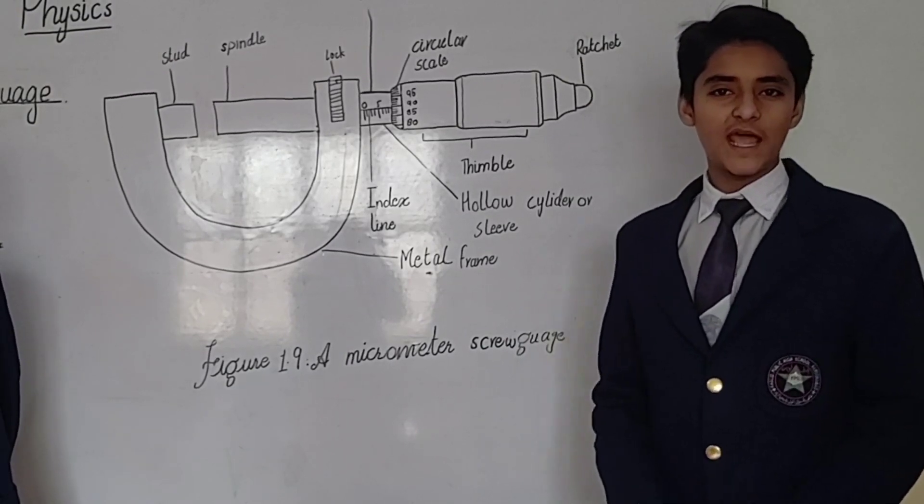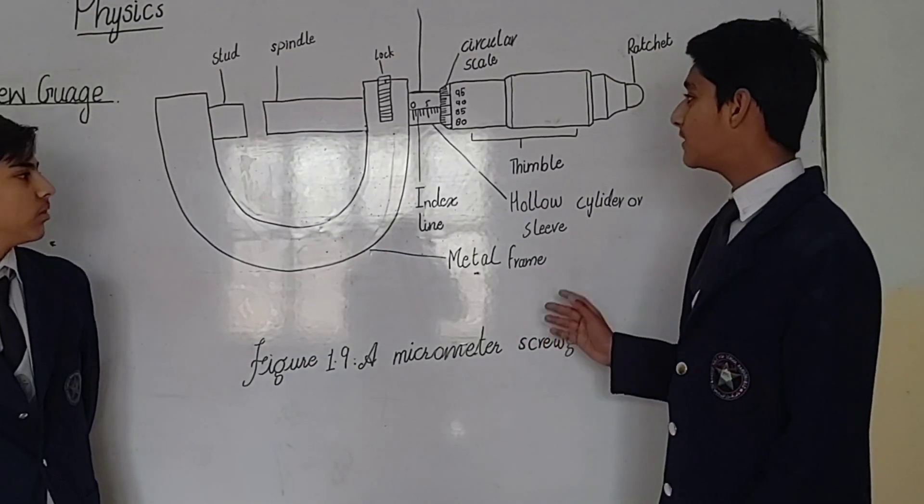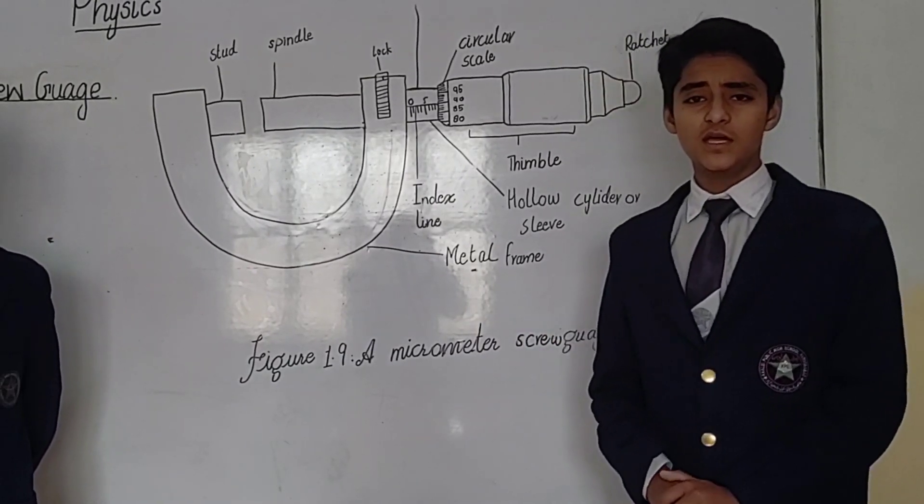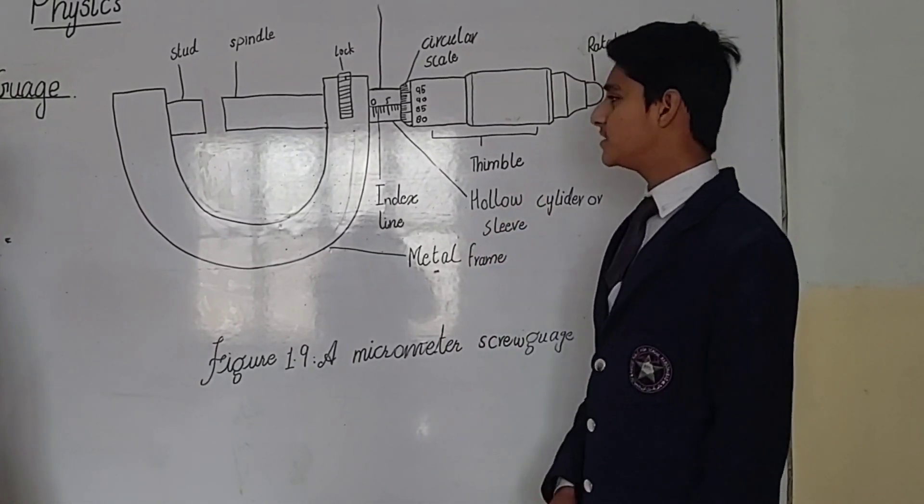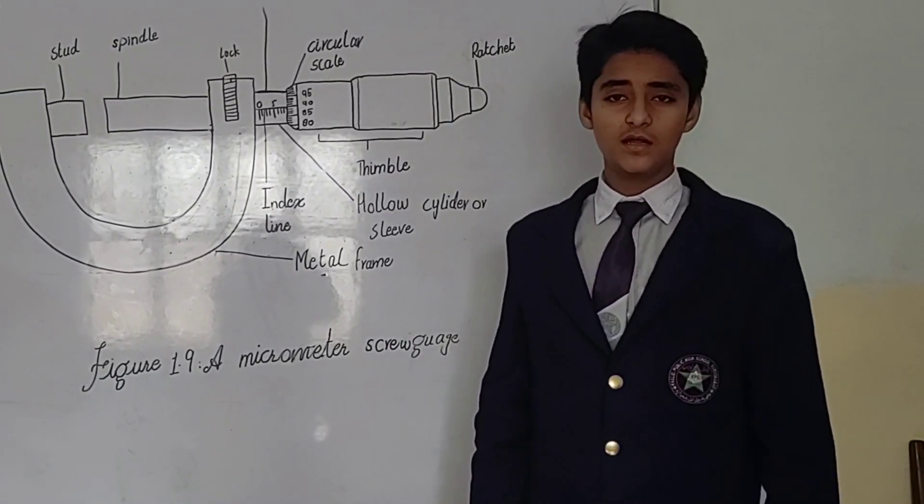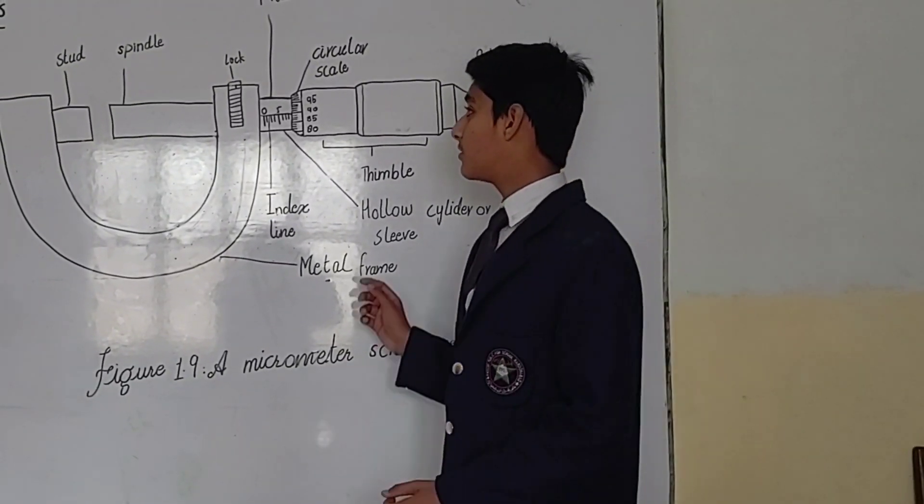Screw Gauge is an instrument that is used to measure small lengths and diameters greater than one micrometer. It is also called the micrometer screw gauge. Least count of the screw gauge is 0.01 mm or 0.001 cm. This is a brief introduction to the screw gauge.